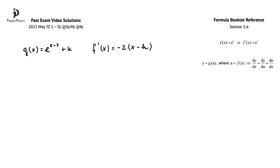This is a show-that question where we are given the final result, h equals e plus 6 over 2, and we have to show the steps that lead to this result.